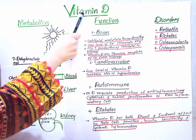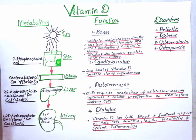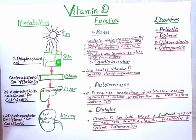Vitamin D being a fat-soluble vitamin means it can be stored within our body, because the cells of our body are surrounded by fatty layers and it allows for the movement of this vitamin into those cells easily, and therefore it is easy to be stored.